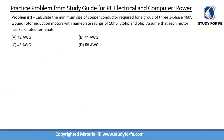Let us now work through some practice problems. This particular problem is from the study guide. It is asking us to calculate the minimum size of copper conductor required for a group of three three-phase 460V wound rotor induction motors with nameplate ratings of 10hp, 7.5hp, and 5hp.